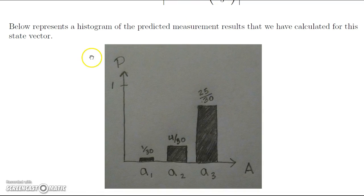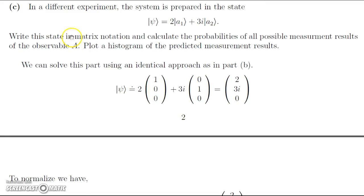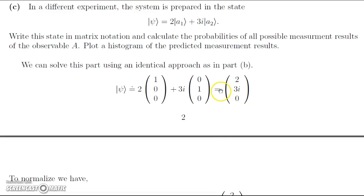Now we do an identical process with a different state vector. In a different experiment, the system is prepared in the state psi equal to 2A1 plus 3i A2. An important thing to note is that we have no A3 component. We write this in matrix notation: psi equals 2 times (1,0,0) plus 3i times (0,1,0), with no component in the A3 direction, giving us the column vector (2, 3i, 0).